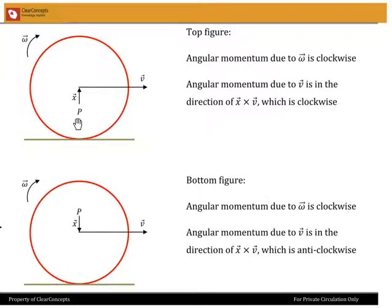And therefore these two quantities, the angular momentum, both due to omega as well as due to v, will change in their magnitudes. And if they are adding up, they will obviously,